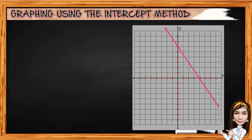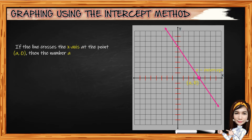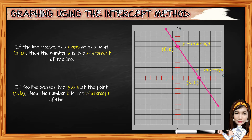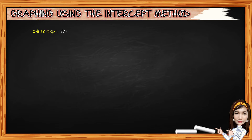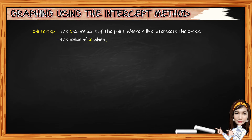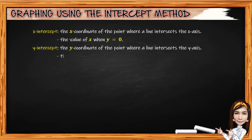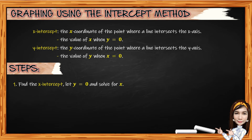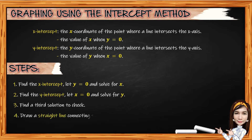Now, let's have the third method — graphing linear equations using the intercept method. If a line crosses the x-axis at point A comma 0, then A is the x-intercept. If it crosses the y-axis at point 0 comma B, then B is the y-intercept. The x-intercept is the value of x when y equals 0; the y-intercept is the value of y when x equals 0. Steps: for number 1, find the x-intercept by letting y equal 0 and solving for x. For number 2, find the y-intercept by letting x equal 0 and solving for y. For number 3, find a third solution to check. For number 4, draw a straight line connecting the points.